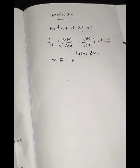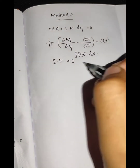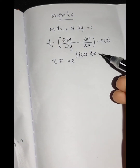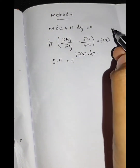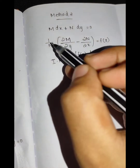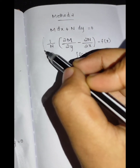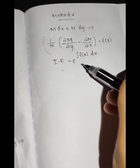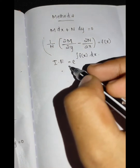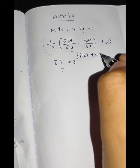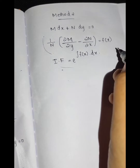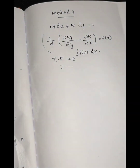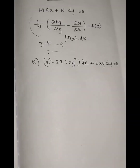This is the integrating factor: e raised to the integral of f(x) dx. We multiply the entire equation by the integrating factor to make it an exact equation.